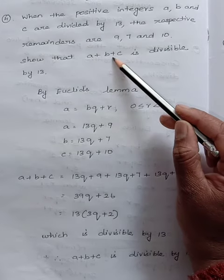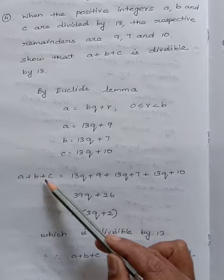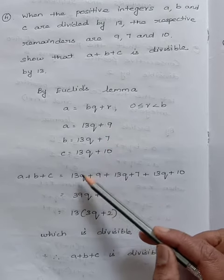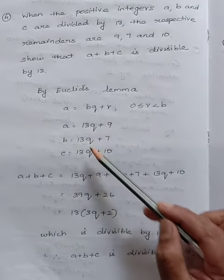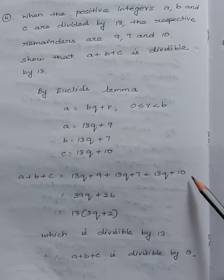Now we find a plus b plus c by adding all terms: 13q plus 9, plus 13q plus 7, plus 13q plus 10.